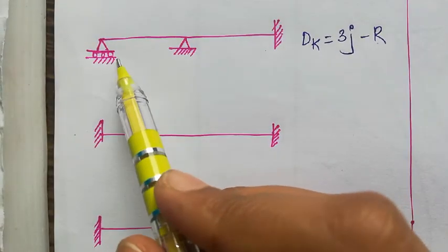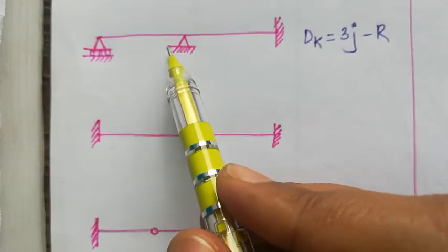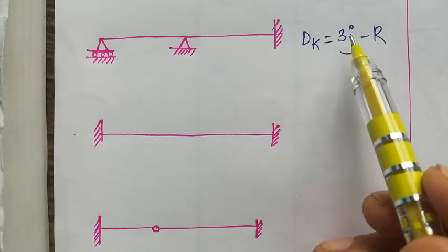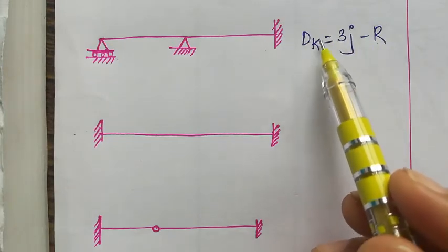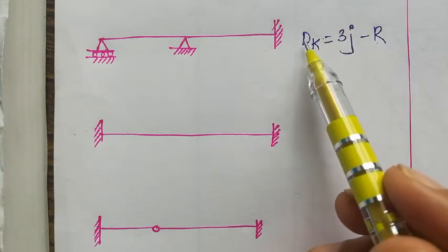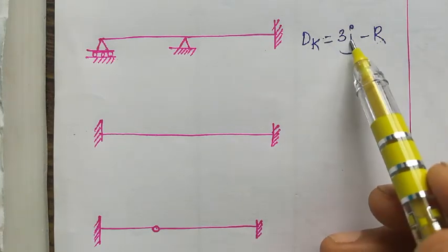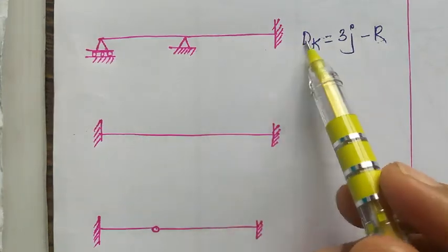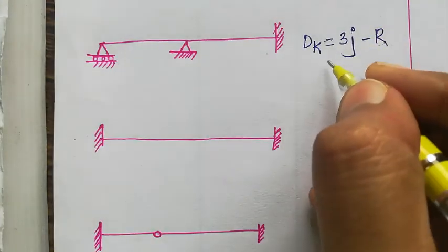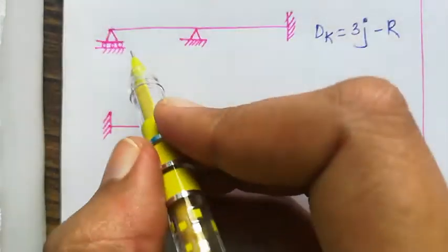Today we are dealing with kinematic indeterminacy, or degree of freedom, for beams. It is given as 3j minus r, where DK stands for kinematic indeterminacy. So, the degree of kinematic indeterminacy is given by 3j minus r, where j is the number of joints and r is the number of external reactions.